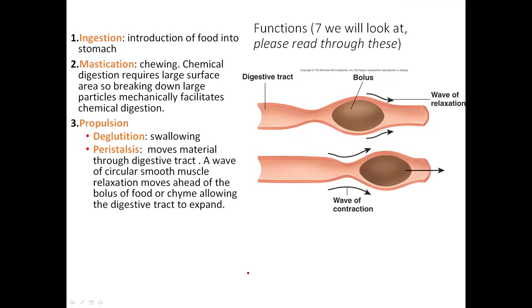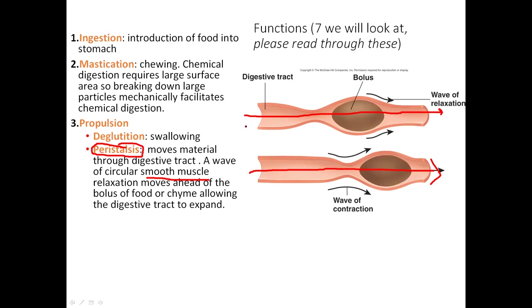Know these key terms: ingestion is where we actually introduce food into the body. Mastication is the process of chewing. The way food moves through the tubes is called peristalsis — a constant smooth muscle contraction that propels food through. Deglutition is the act of swallowing.